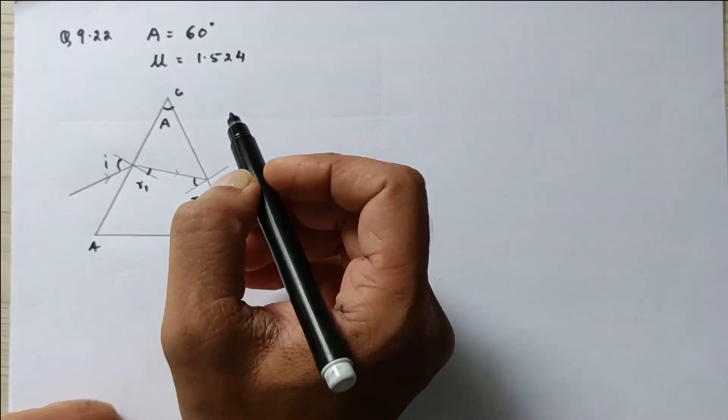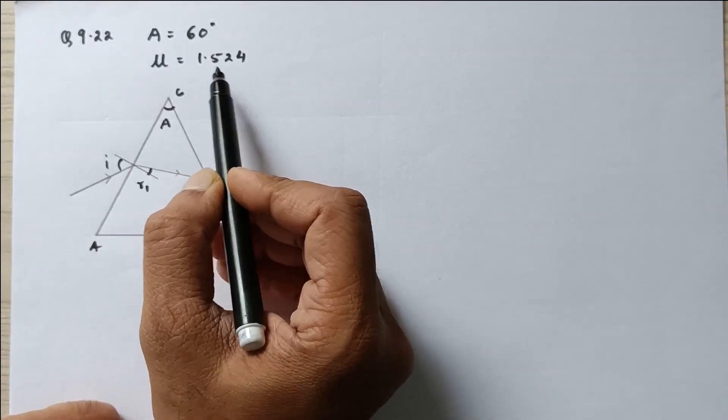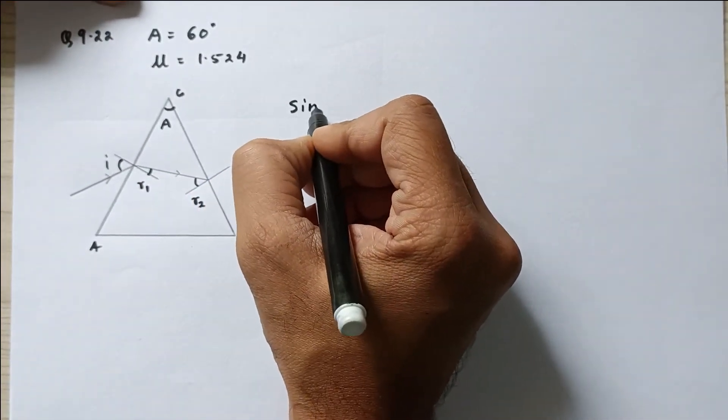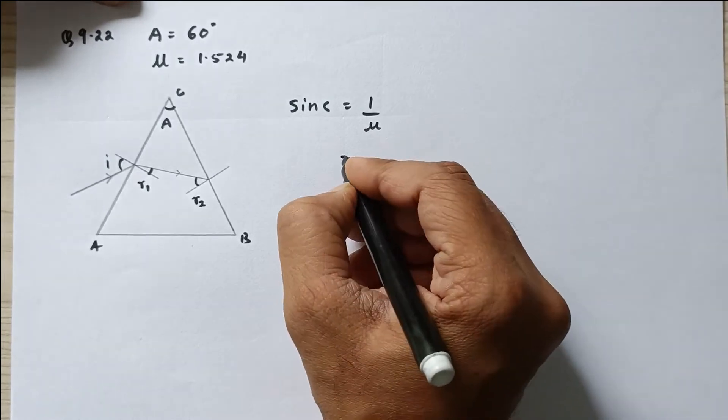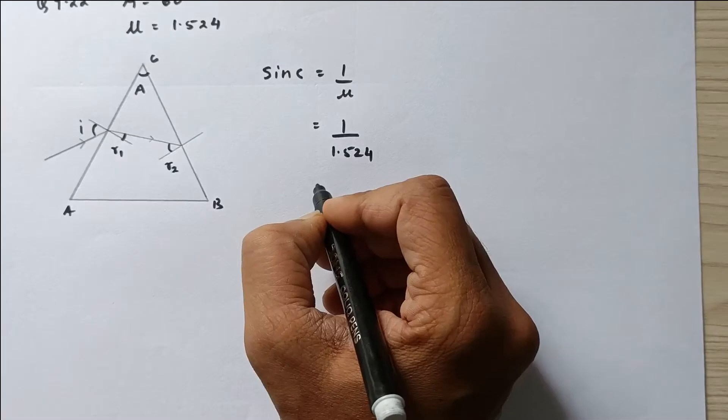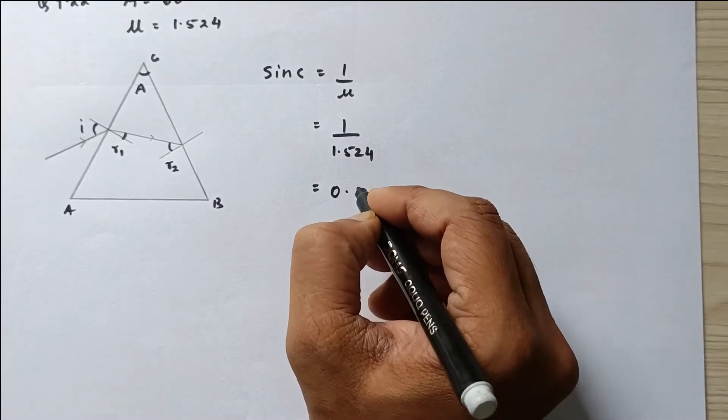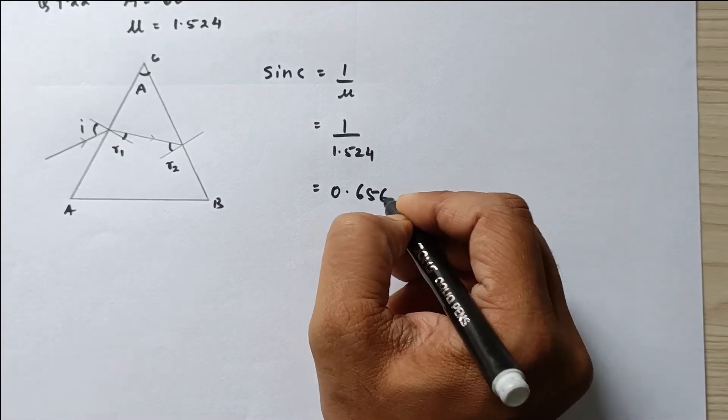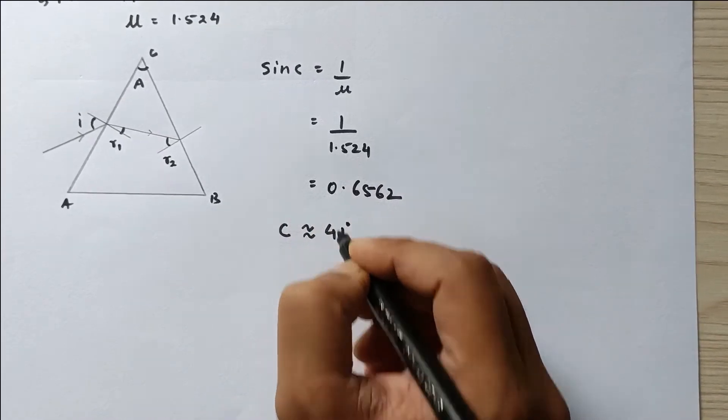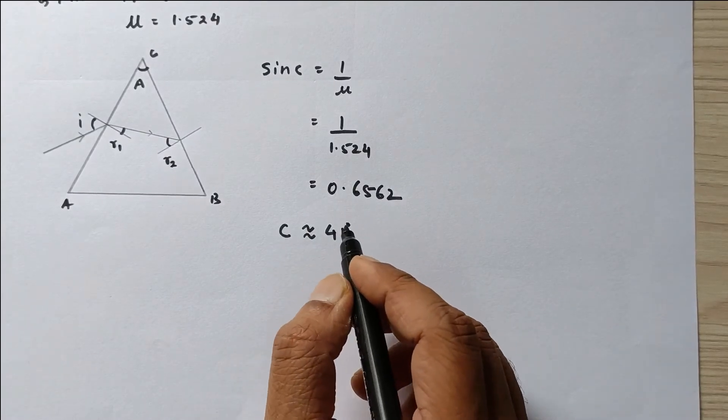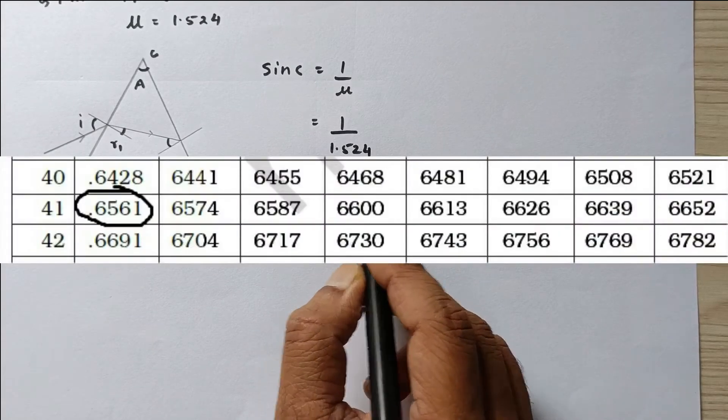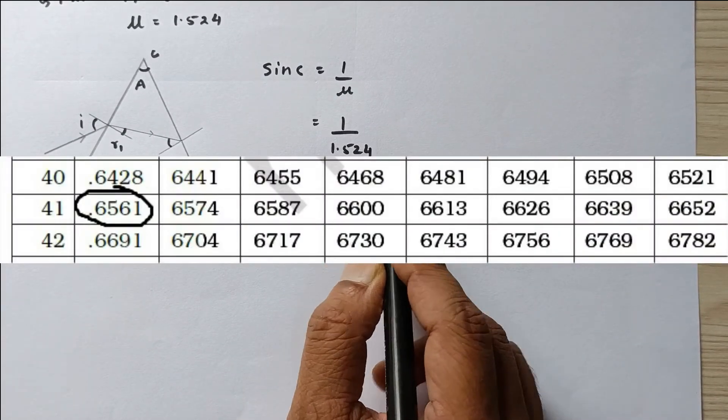First of all, let us find out the critical angle with the help of this particular refractive index. We know that sin of critical angle is equal to 1 upon μ, which is equal to 1 upon 1.524. This value is equal to 0.6562, and then the critical angle is almost 41 degrees. You can make use of the natural sine table and find out that sin of 41 degrees gives this value.